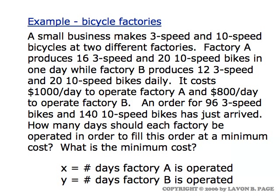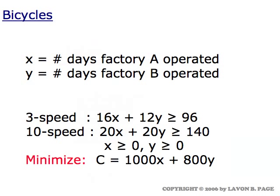This was the original statement of the bicycle problem. We were trying to decide how many days to operate factories A and B in order to minimize the cost. The setup that went into either the graphical solution or the simplex method solution is formulated right here: the ten-speed constraint, the three-speed constraint, and the cost function which we're minimizing — X being the days to operate factory A, Y being the days to operate factory B.